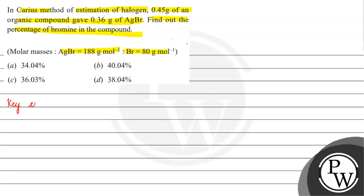The key concept for this question is percentage of bromine. Percentage of bromine will be equals to mass of bromine by mass of organic compound into 100.